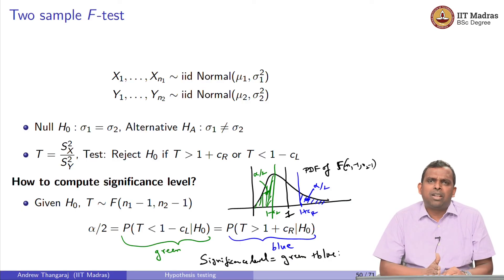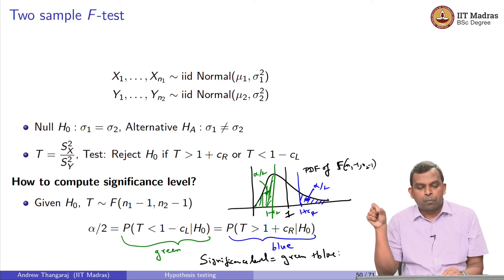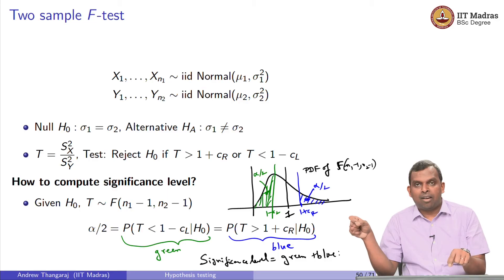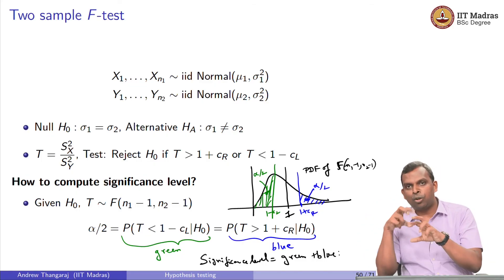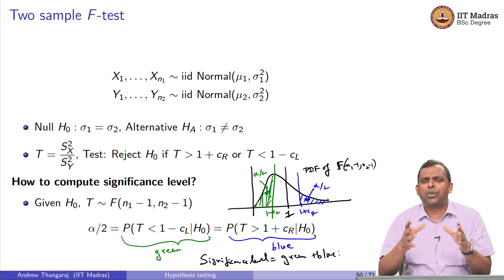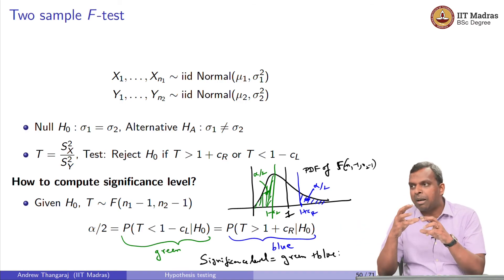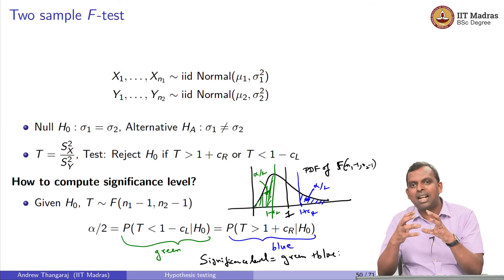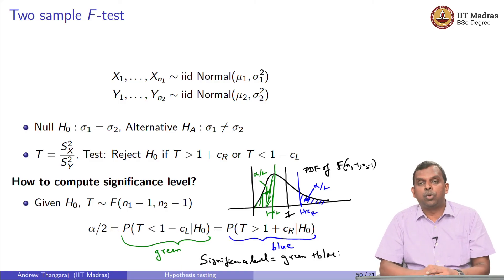For power calculation you bring in a particular alternative value for sigma. Given the alternative, the test statistic will have a slightly different — scaled — F distribution. You have to divide T by the appropriate ratio so that the result follows a standard F distribution, and then you can do the power calculation. It is a small manipulation: T multiplied or divided by something gives you the F distribution, and once you have that, the calculation is straightforward.